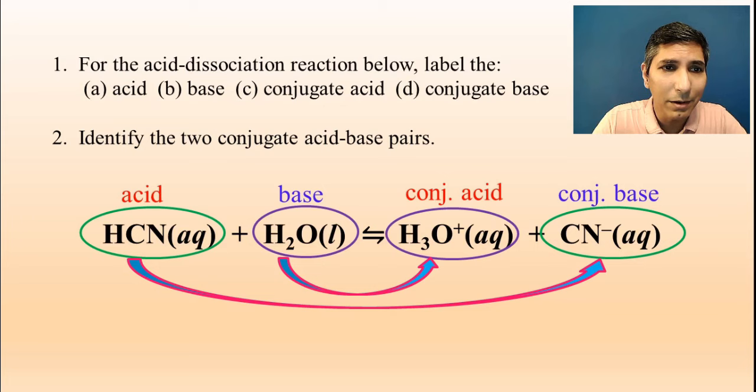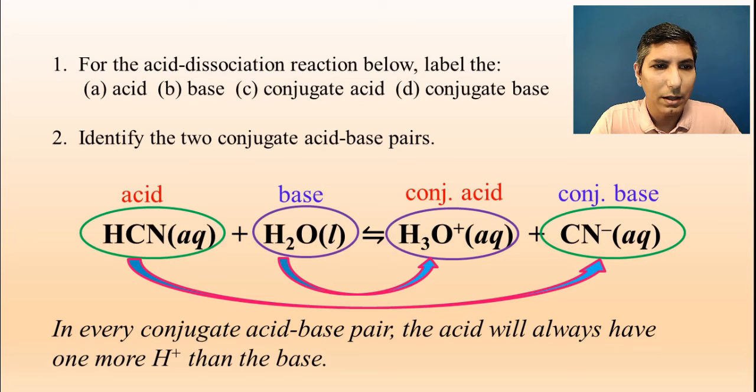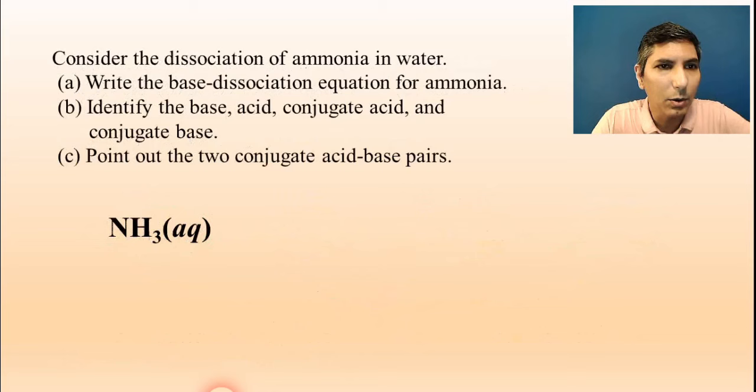So for any one of these acid-base reactions, you should be able to isolate all of these things and isolate the two conjugate acid-base pairs that are present. Now we've looked at two reactions that are acids, but why don't we look at the bases? Like I said, and this is on the screen here officially, in every conjugate acid-base pair, the acid will always have one more H plus than the base. And we see that's the case here.